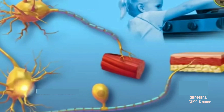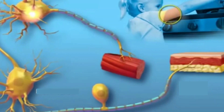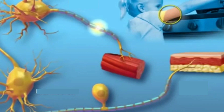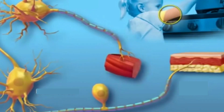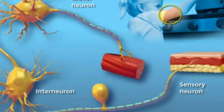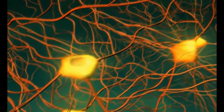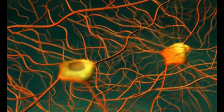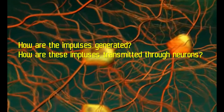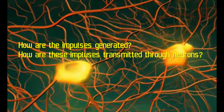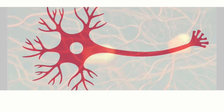Here the stimulus is heat. As a result, an impulse is generated in the receptors, and these impulses are carried by certain neurons to the spinal cord. The spinal cord analyzes these messages, and the information from the spinal cord reaches the muscle through another neuron. The muscle contracts, and as a result, the hand withdraws.